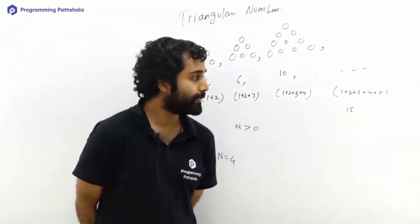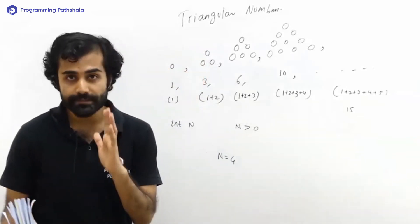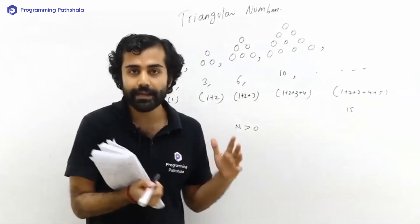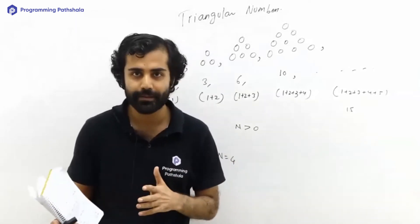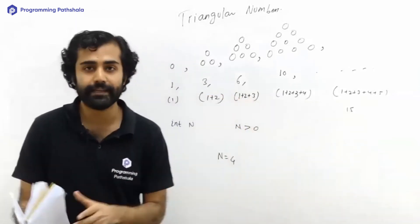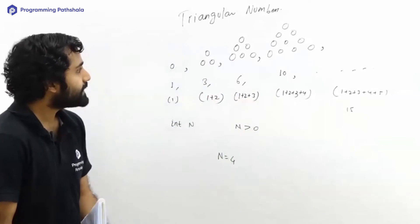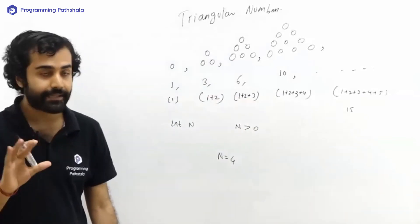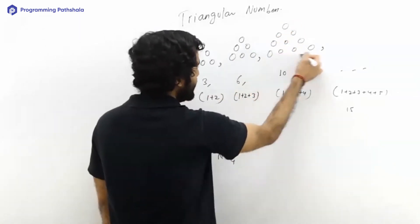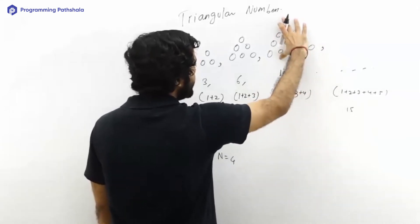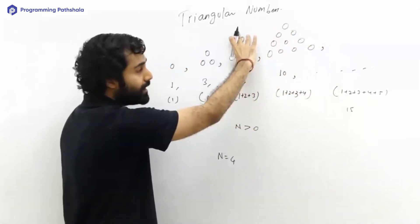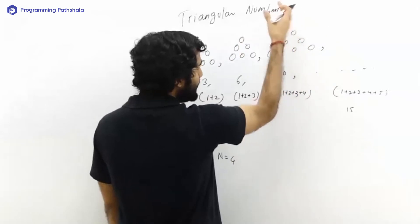Now comes the observation part, and this is the ABC of dynamic programming. Try to get it very clearly. Here if I take a look, can I say that the next triangle can always be created from the previous triangle? Because if I have to create this, all that I'll have to do is add four more dots below it.